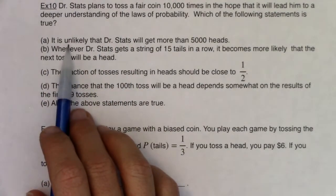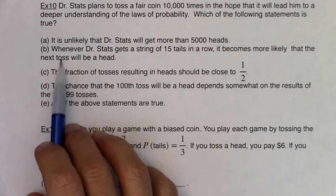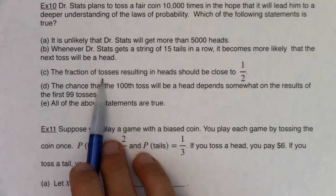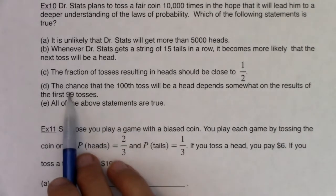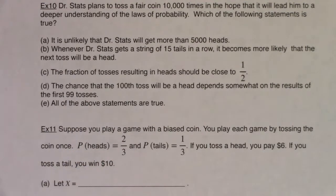Which of the following statements is true? (a) It is unlikely that Dr. Statz will get more than 5,000 heads. (b) Whenever Dr. Statz gets a string of 15 tails in a row it becomes more likely that the next toss will be a head. (c) The fraction of tosses resulting in heads should be close to one half. (d) The chance that the hundredth toss will be a head depends somewhat on the results of the first 99 tosses and (e) all of the above statements are true.